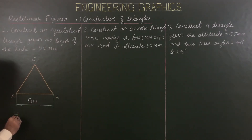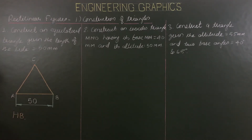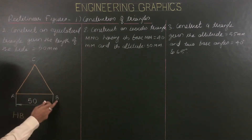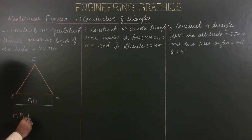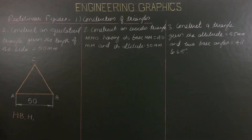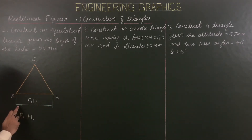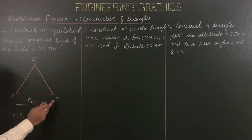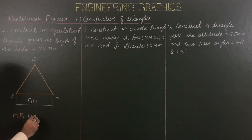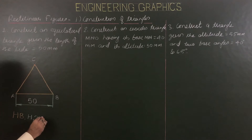Please draw AB, BC, and CA with a dark HB pencil. For all naming, use H pencil. For construction work — thin lines, dimensioning, and extension lines — please use a light 2H pencil.